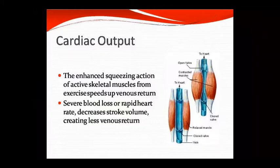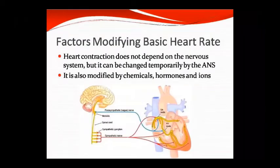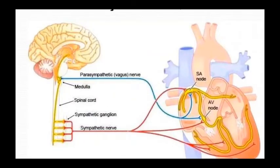This heart diagram shows both open-wall and contracted muscles. The basic heart rate does not depend on the nervous system, but it is temporarily modified by the autonomic nervous system (ANS) through chemicals, hormones, and ions. The diagram shows the parasympathetic vagus nerve carrying nerve impulses from the medulla, and the spinal cord sympathetic ganglia sending sympathetic nerves connected to the AV node.